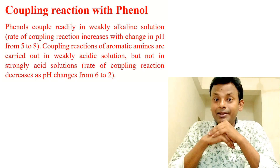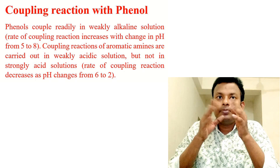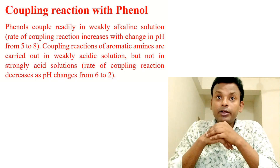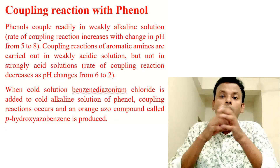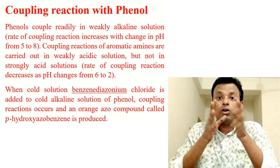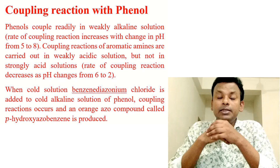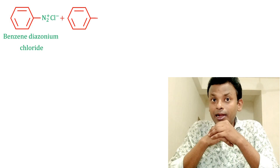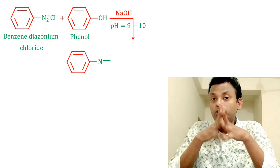Coupling reaction with phenol: phenol couples readily in alkaline solution. The rate of coupling reaction increases with change in pH from 5 to 8. Coupling reactions of aromatic amines are carried out in weakly acidic medium but not in strongly acidic solution; the rate decreases as pH goes from 6 to 2. When cold benzene diazonium chloride is added to cold alkaline solution of phenol, coupling occurs and an orange azo compound called para-hydroxy azo benzene is produced. The reaction proceeds at pH 9 to 10, forming the sodium salt of para-hydroxy azo benzene, which is orange colored.